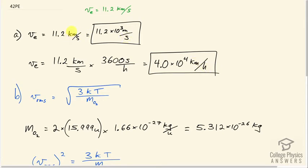So the prefix kilo means multiply by 10 to the 3, and so the conversion is just 11.2 times 10 to the 3 meters per second. And to convert to kilometers per hour, we take this 11.2 kilometers per second and multiply it by 3,600 seconds per hour, giving us kilometers per hour. That's 4.0 times 10 to the 4 kilometers per hour. That's 40,000 kilometers an hour.